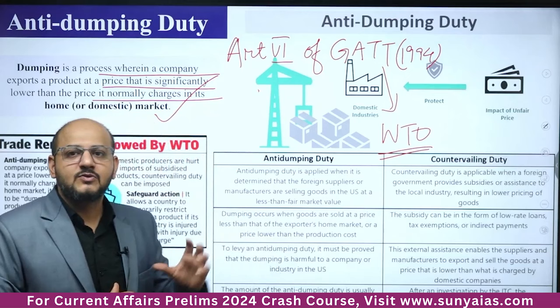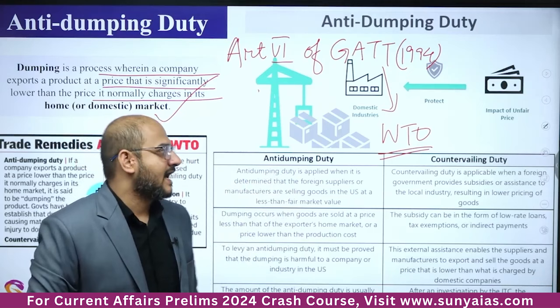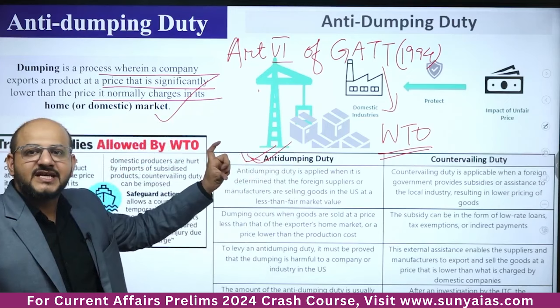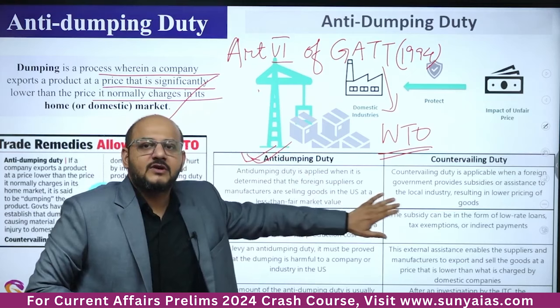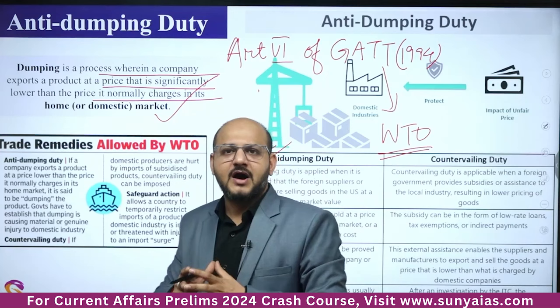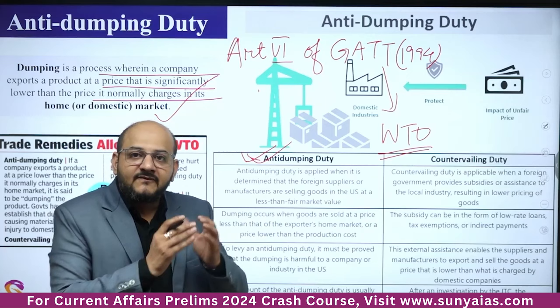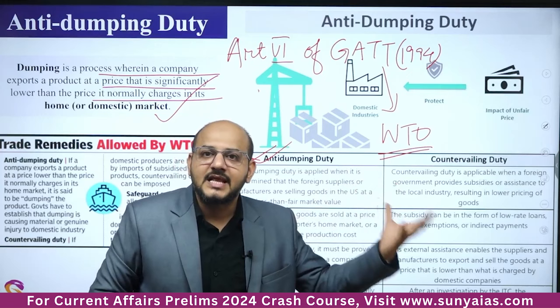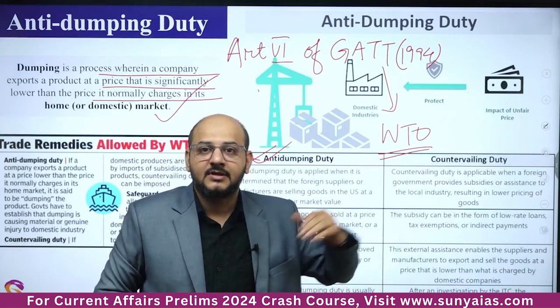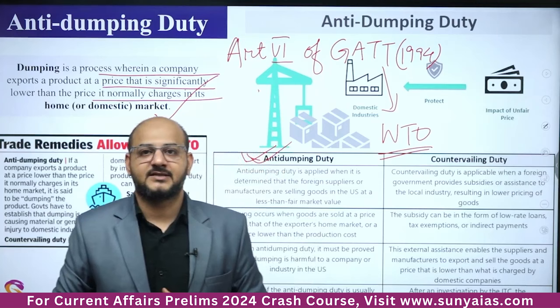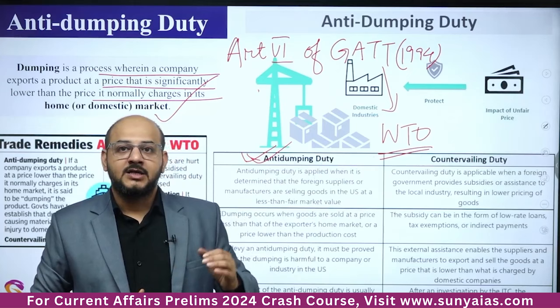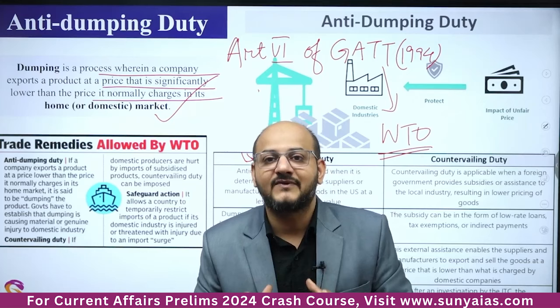One more related concept is countervailing duty. These two are somewhat synonymous as both are tariff measures. The difference is that anti-dumping duty is a direct determination based on change in domestic versus export price. But countervailing duty applies when a foreign government provides subsidies — for example, subsidies given by the Government of India to farmers, making the final export price of food grains lower than global market prices. To prevent such goods, other countries may implement countervailing duty.